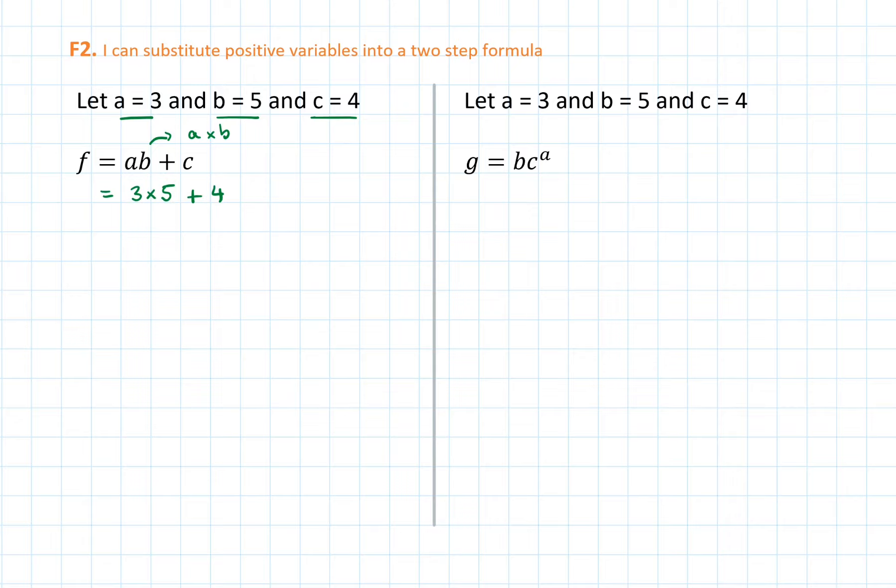Again, we do the multiplication first. 3 times 5 is 15, plus 4, which will equal 19.